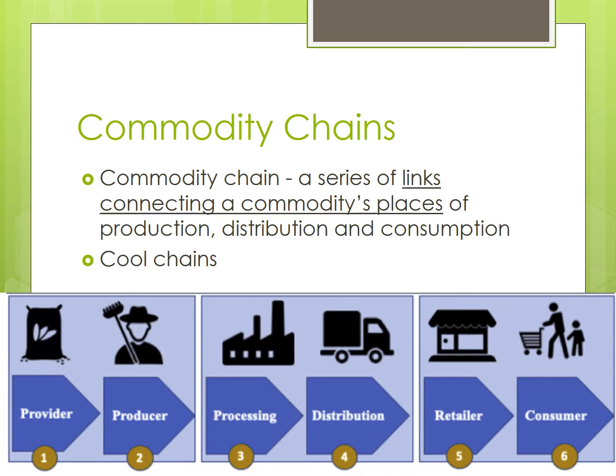And commodity chains can get incredibly complex, with many steps in the process from farm to table. For example, corn has numerous uses, such as livestock feed, sweeteners, and fuel, and the commodity chain for each would be more specialized and complex than the one shown on screen. Processes that add value to a commodity — such as dairy milk being processed into cheese or ice cream — add additional steps and complexity to the commodity chain.